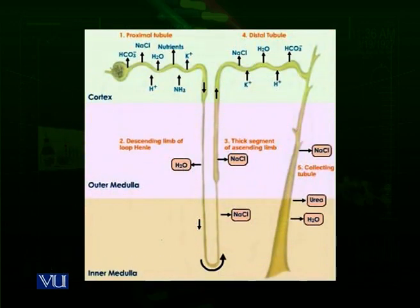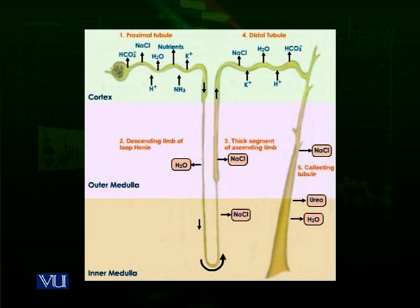Let us look at the next diagram, which shows different parts of the nephron. In the proximal tubule, for example, there is reabsorption of sodium chloride, water, various nutrients, and potassium ions. From the cortex, ammonia and hydrogen ions are actually entering inside this proximal tubule. This process occurs against the concentration gradient and it occurs by diffusion.